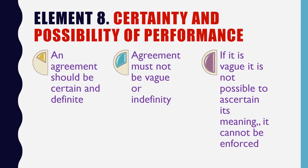Element 8: Certainty and Possibility of Performance. An agreement should be certain and definite — the subject matter of the agreement should be possible to perform. The agreement must not be vague or indefinite. For example, to lift the Himalayas is impossible for everyone; to stop the rain is also impossible for everyone. These types of terms cannot be included in an agreement. If the agreement is vague and it is not possible to ascertain its meaning, then the agreement cannot be enforced and neither can the contract.